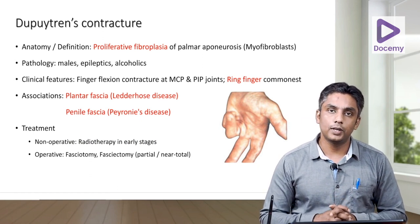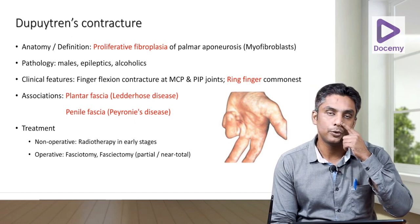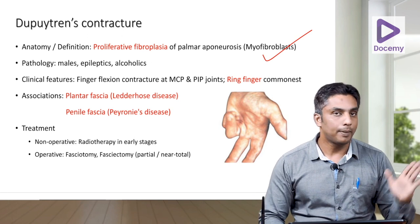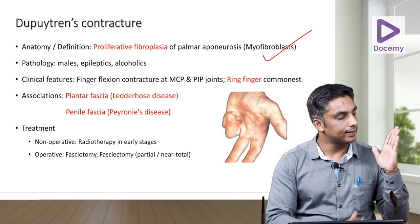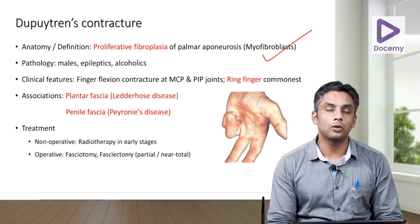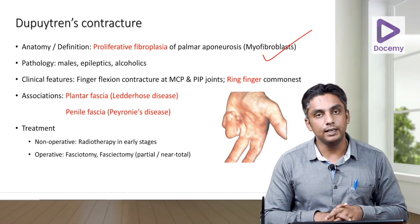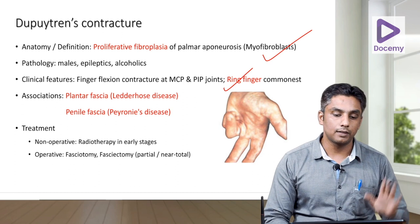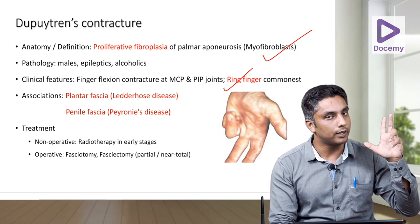Dupuytren's contracture is a very important short note. Definition: it is proliferative fibroplasia of the palmar aponeurosis — the proliferative cell lineage is myofibroblasts (important MCQ). This thickening of the palmar aponeurosis leads to flexion contracture of the MCP and PIP joints. It is commonly seen in males, epileptics, and alcoholics. The ring finger is the most commonly affected finger, giving the patient a claw hand-like appearance.